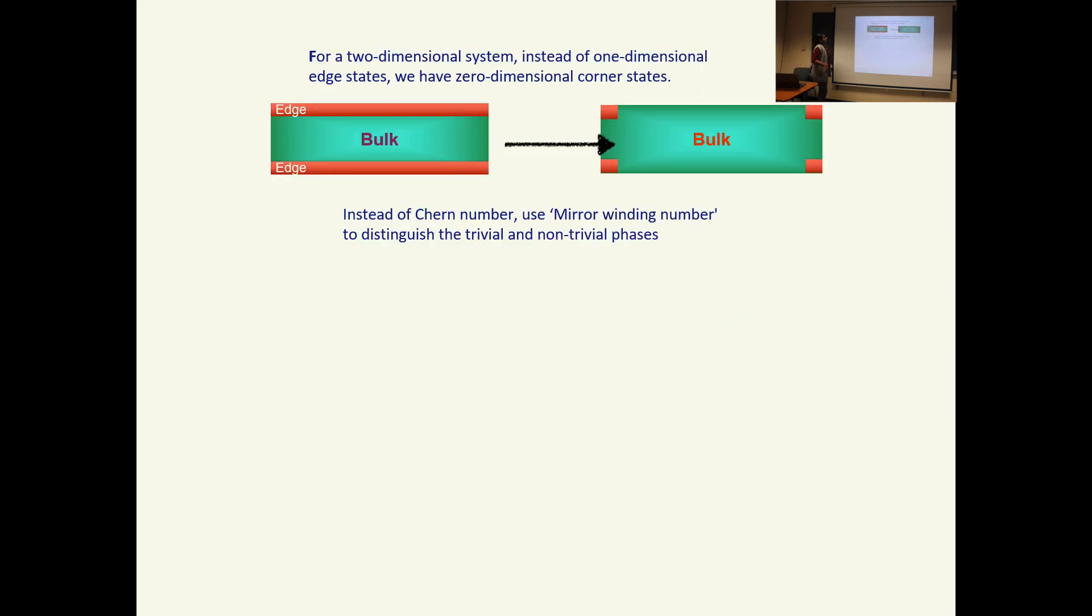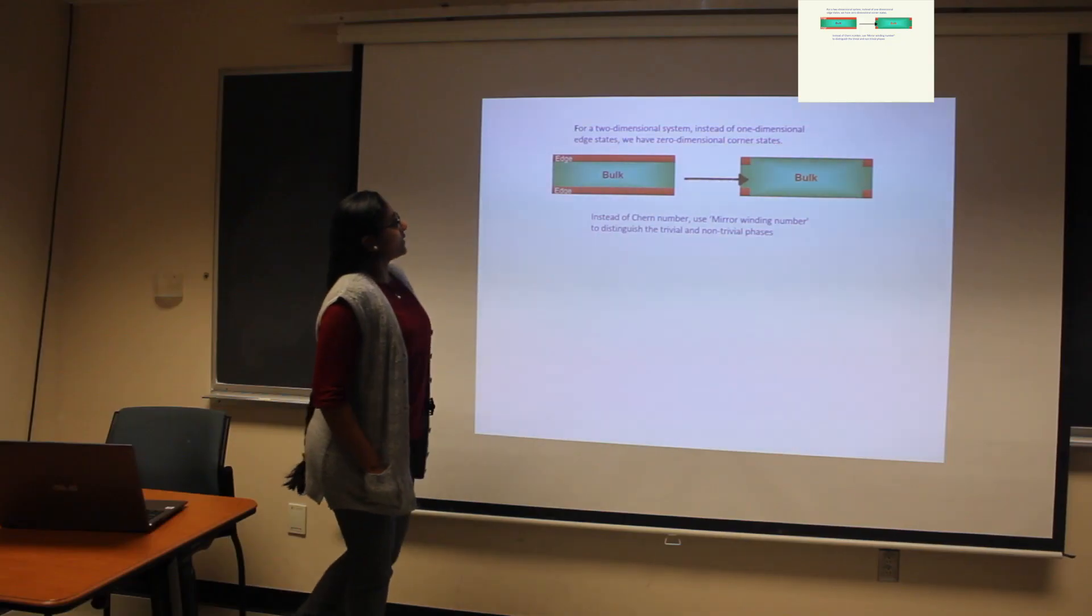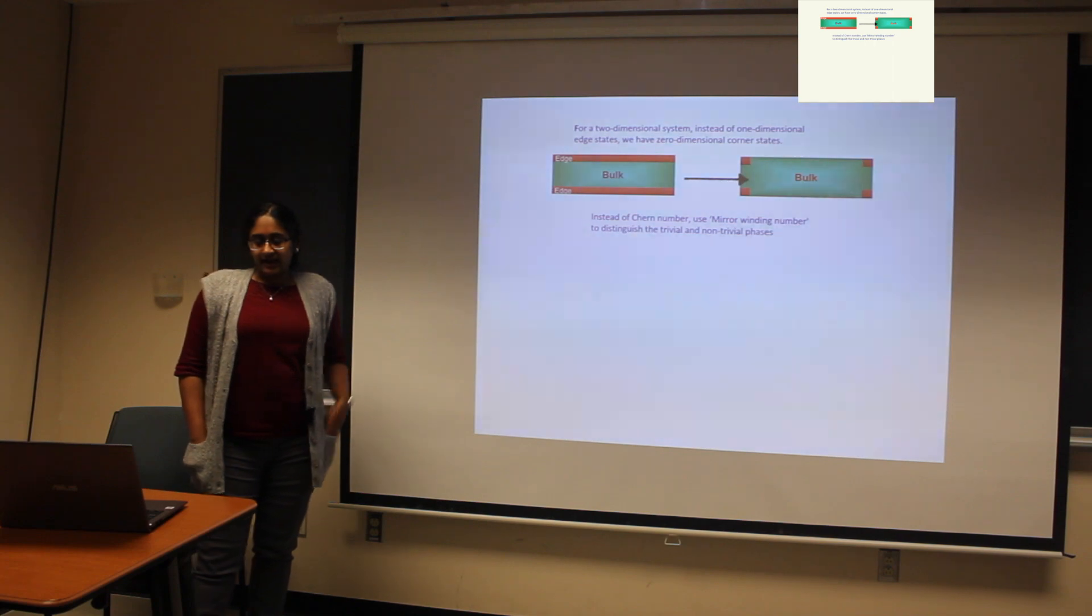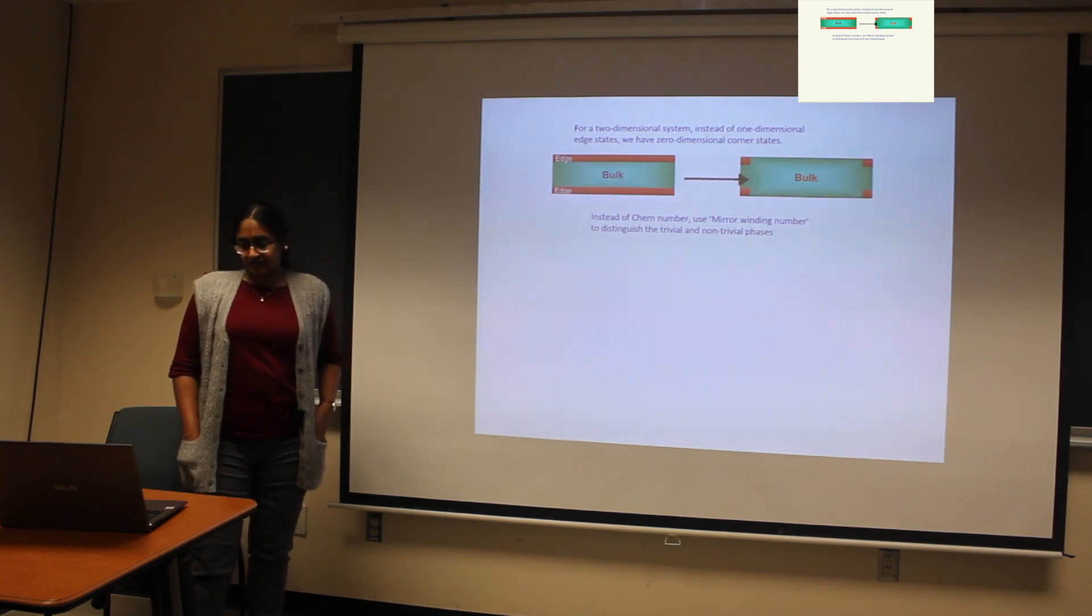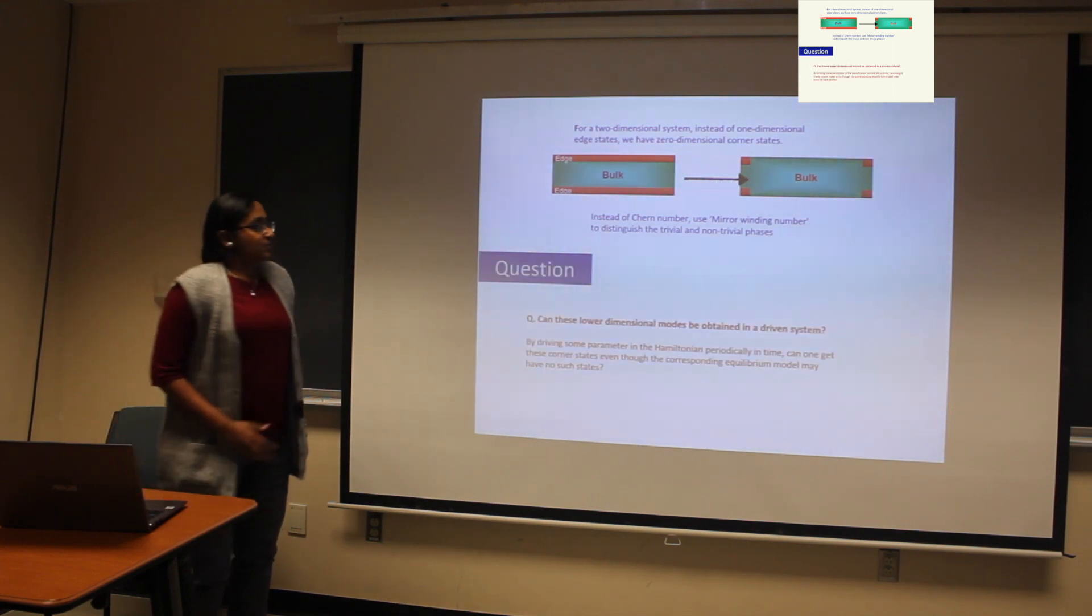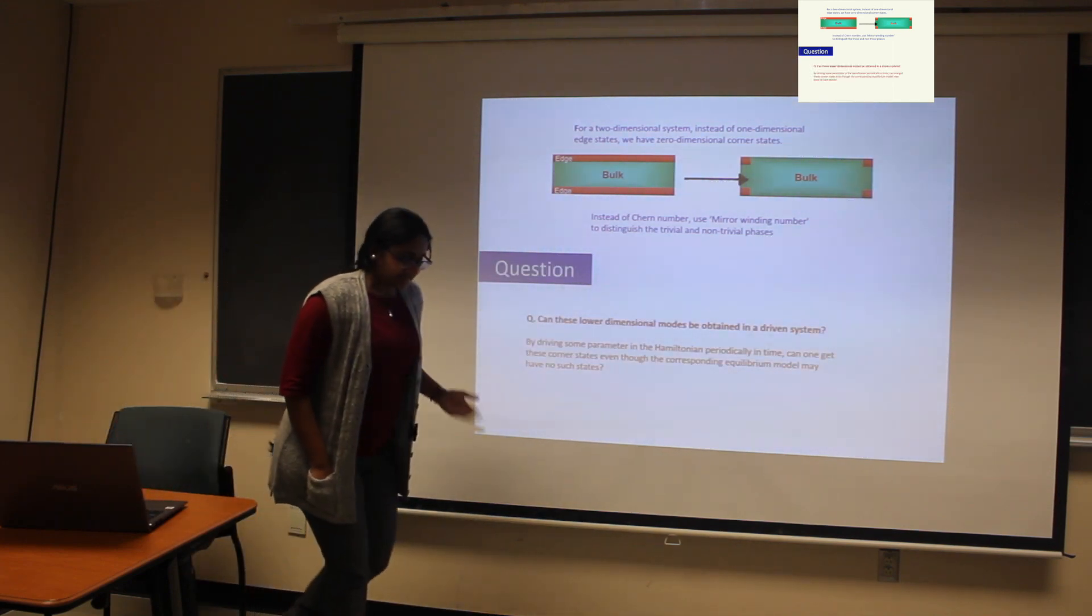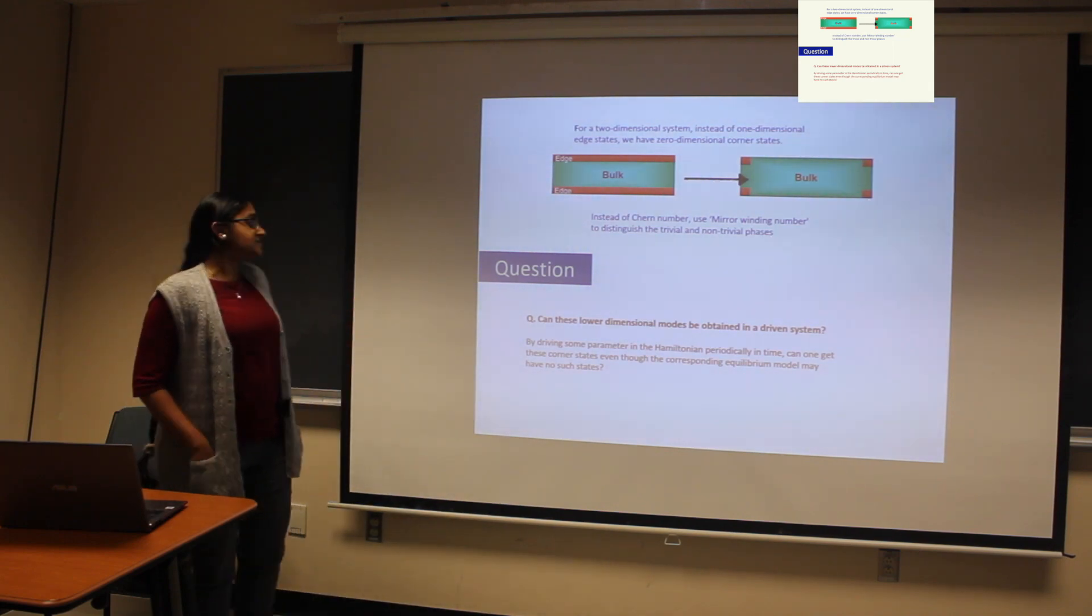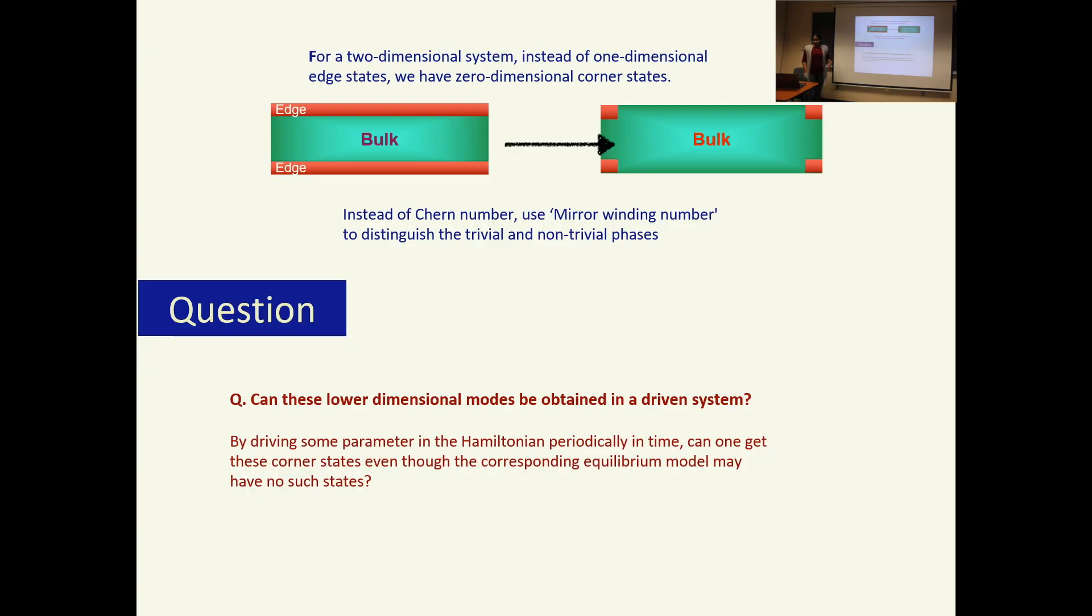So for a 2D system, instead of 1D edge states we now have zero dimensional corner states, and instead of the Chern number we use the mirror winding number to characterize the trivial and the non-trivial phases. Which brings us to the question: can these lower dimensional modes be obtained in a driven system? If I drive a parameter in the Hamiltonian periodically in time, is it possible to get these corner states even though the corresponding equilibrium model will not have such states?